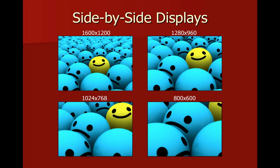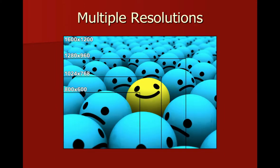Here's a side-by-side view of all four of those settings. Keep in mind the physical size of the monitor isn't going to change, but I can change the display setting and this is how it impacts my ability to view an image that's 1600 by 1200 pixels — that's a very large image. I've left a border showing where the edge of the monitor would be so you can see how much of that image fits within each of those resolutions.